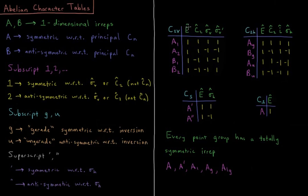Along the columns of the character table we have individual symmetry operations. Like C2V has E, C2, sigma V, and sigma V prime. C2H has E, C2, I, and sigma H. C1 just has E, Cs has E and sigma H, etc.